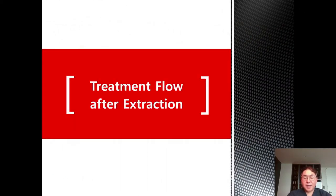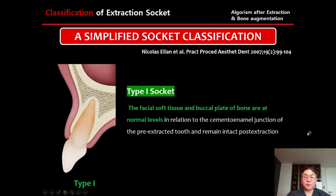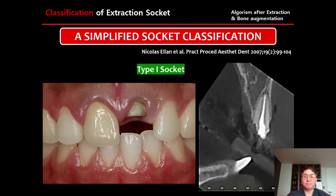Let's talk about treatment flow after extraction. I always decide my treatment flow based on socket classification — specifically the simplified socket classification introduced by Nicholas Ellian: Type 1, Type 2, and Type 3. Let's talk about each one.